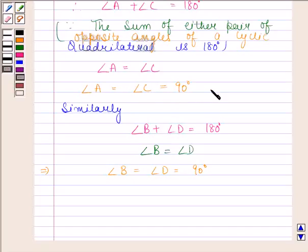Now we can see that all the angles of quadrilateral ABCD are equal to 90 degrees.